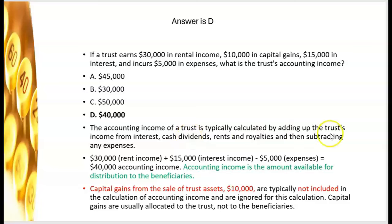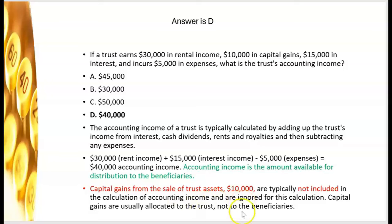So we have $30,000 + $15,000 = $45,000 allocated to the income beneficiary, minus $5,000 in expenses, giving trust accounting income of $40,000 — answer D. Accounting income is calculated by adding interest income, cash dividends, rents, and royalties, then subtracting expenses. Capital gains from the sale of trust assets are typically not included in accounting income because they are allocated to the trust itself, not the beneficiaries.